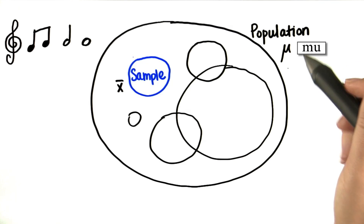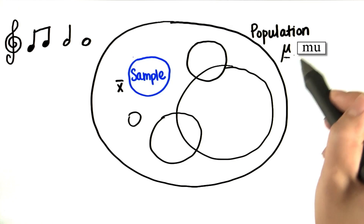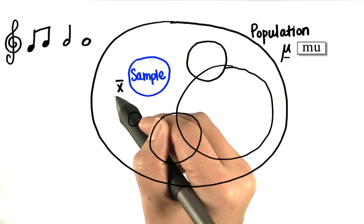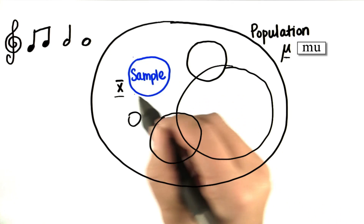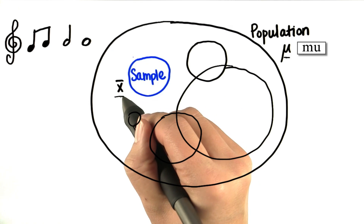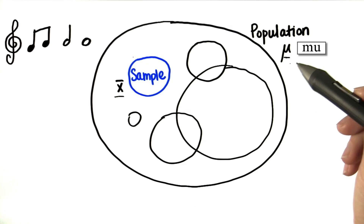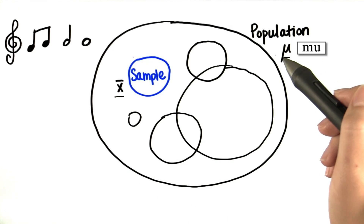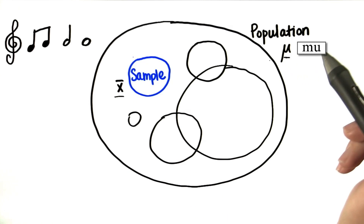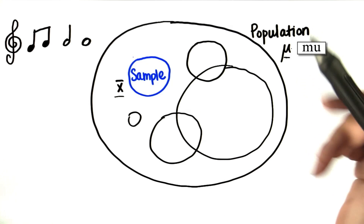So don't worry — you'll soon become familiar with these symbols, because we're going to use them throughout this course. Now, we can use this sample statistic to approximate the population parameter. But generally, they won't be exactly the same.